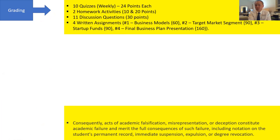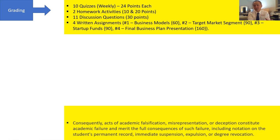To get a grade for Business 313, you will need to complete 10 quizzes administered weekly, worth 24 points each. There will also be two homework activities — the first assigned in week one and the second in week four. These two homework activities will help you plan and prepare for the written assignments. If you don't do them, you will lose points and won't have the guidance needed to start your business plan, which you will write in different components and combine together as one in week 11.